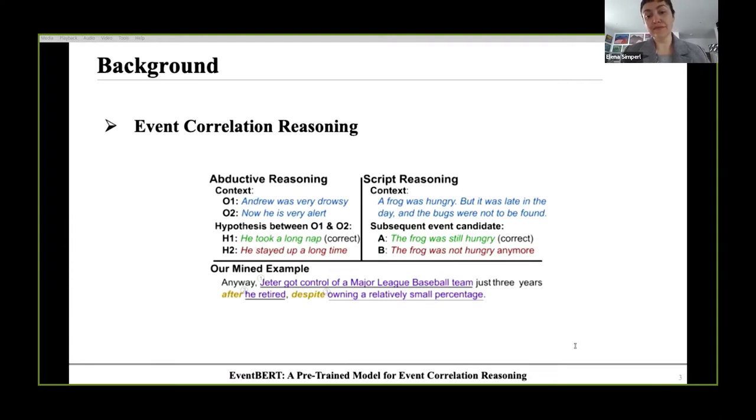In script reasoning, given a sequence of events, a frog was hungry, but it was late in the day and the bugs were not to be found, we need to infer a potential subsequent event, the frog was still hungry. Although formulated as different tasks, they all require event correlation reasoning.